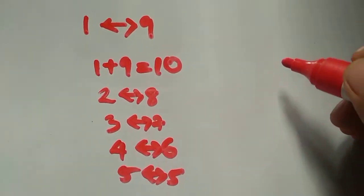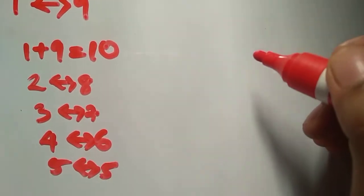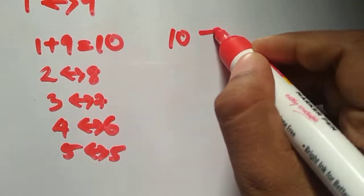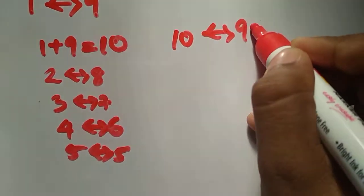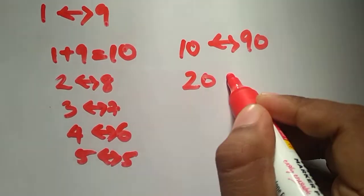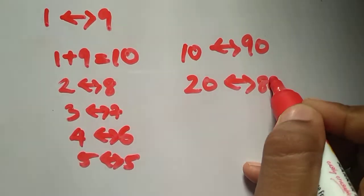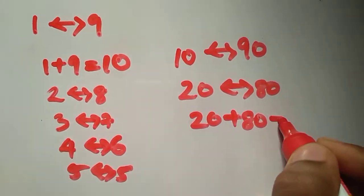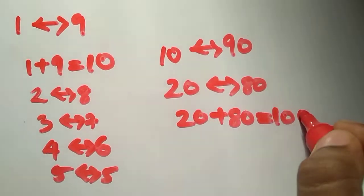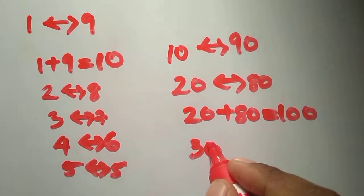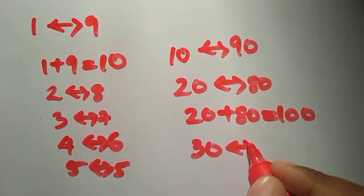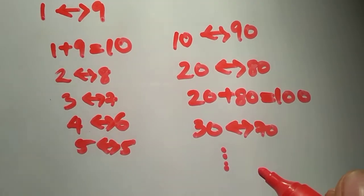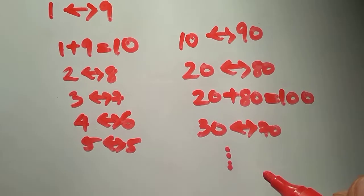So we will find the complements for 100. The complement of 10 with respect to 100 is 90. The complement of 20 is 80, because 20 plus 80 gives 100. The complement of 30 is 70, and it goes on like that. These 100's complements will be useful in many additions.